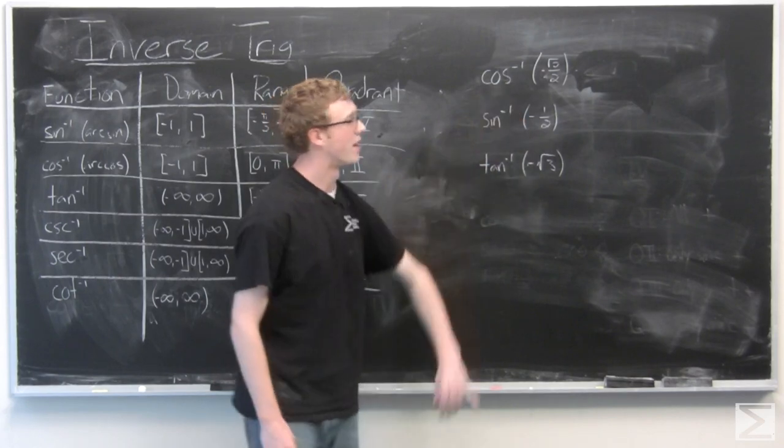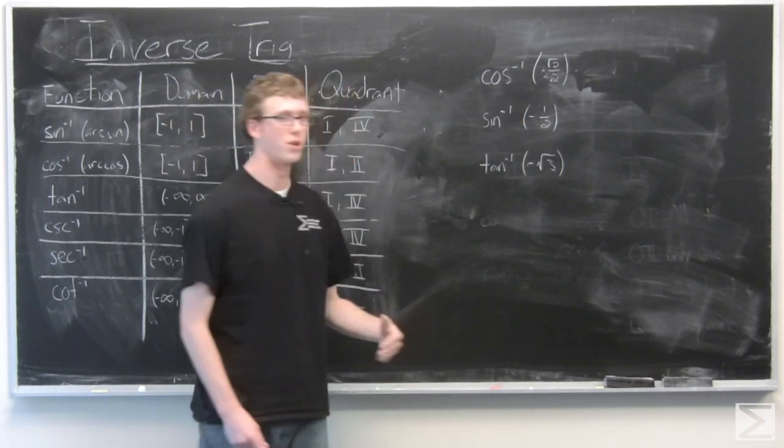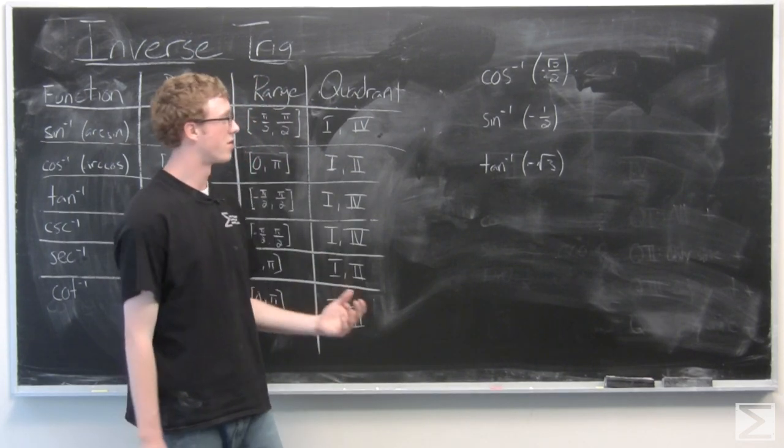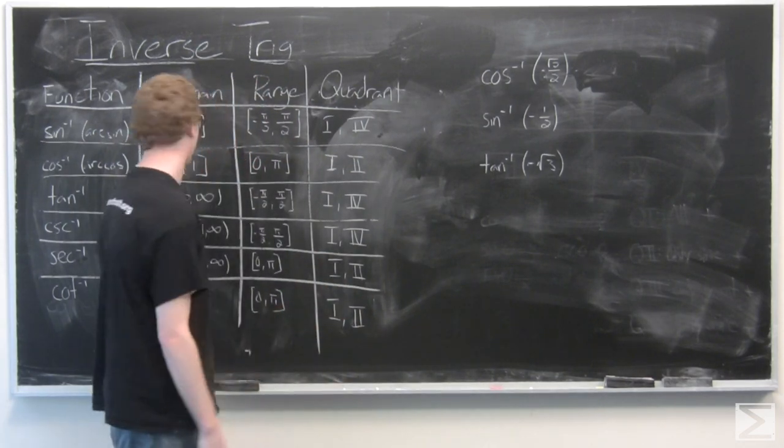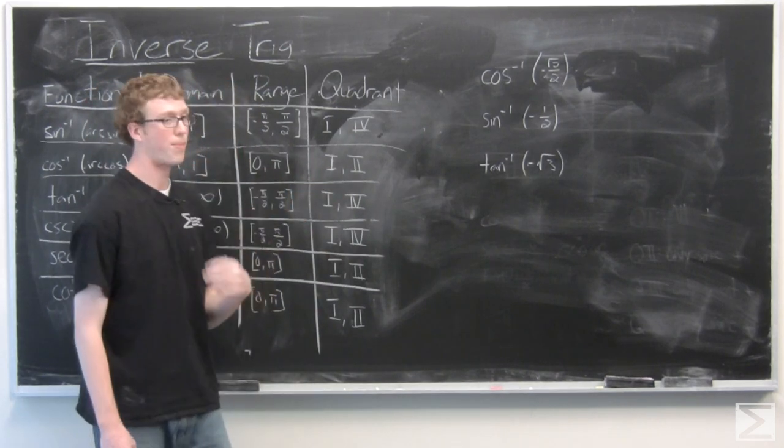So we're asked to find inverse cosine of negative √2/2. Well, we know that cosine is negative in quadrants 2 and 3, and we take a look at our table and see that we're looking for quadrant 2 because the range is 0 to π.